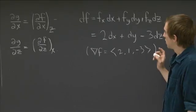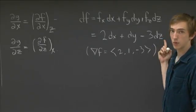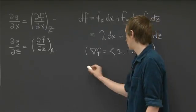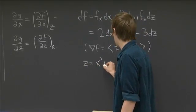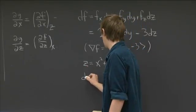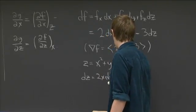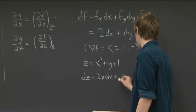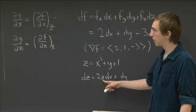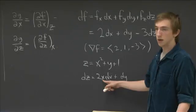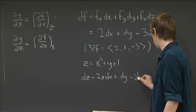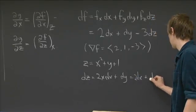So that's the total differential of f, and now we have the constraint. When we do partial derivatives with constraints, the trick is to take the differential of the constraint. We had z = x² + y + 1, so taking its differential gives dz = 2x dx + dy. Since we're only focused on the point p where x = 1, this simplifies to dz = 2 dx + dy.